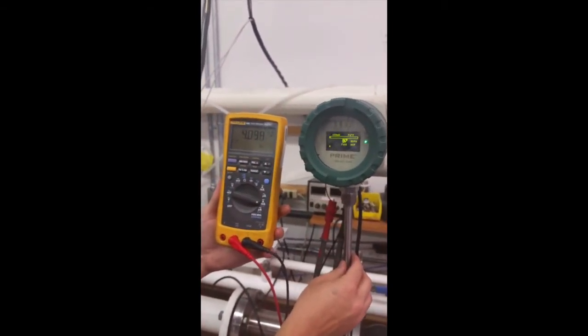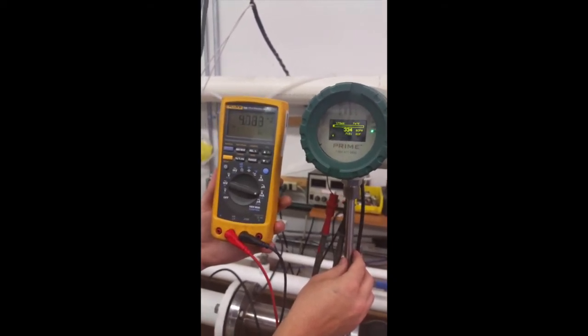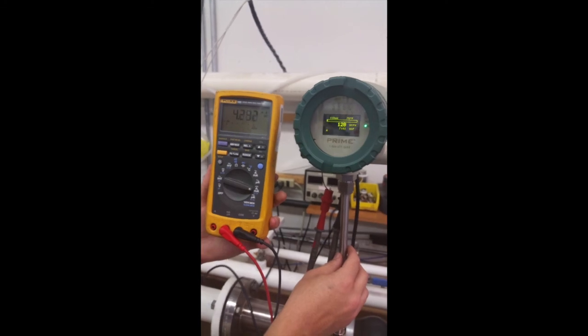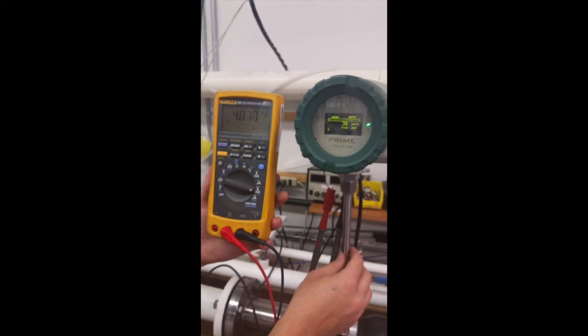Now that the meter's on, the milliamps should briefly shoot up and then come back down. And you have externally powered 4 to 20 milliamps. And that's it. That's all you have to do. It's as simple as pie.